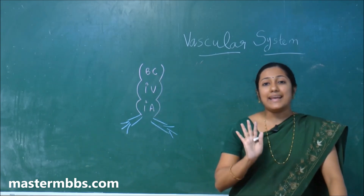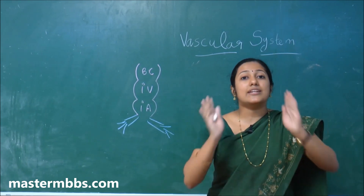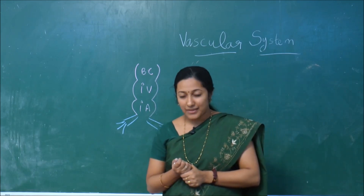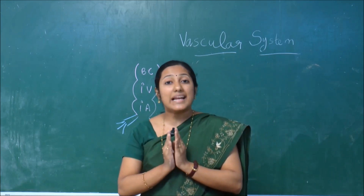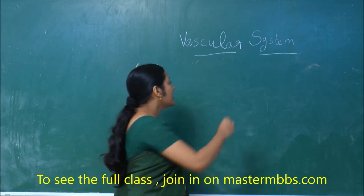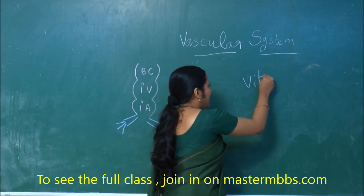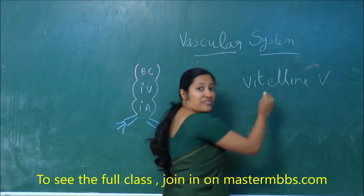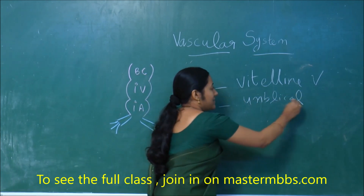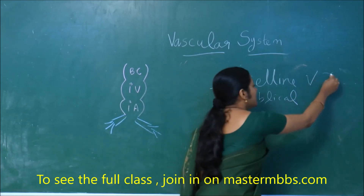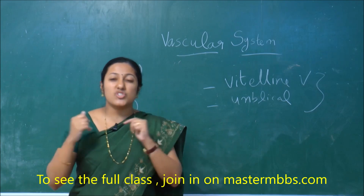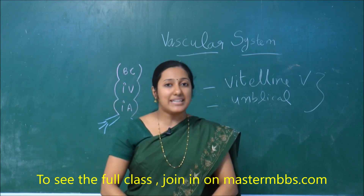Basically, the veins in the fetus are divided into two groups: visceral veins and somatic veins. The visceral veins mainly consist of two types — the vitelline veins and the umbilical veins. These two veins together constitute the visceral veins, which drain blood from the viscera of the fetus.